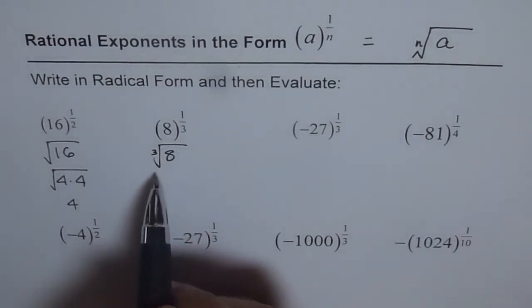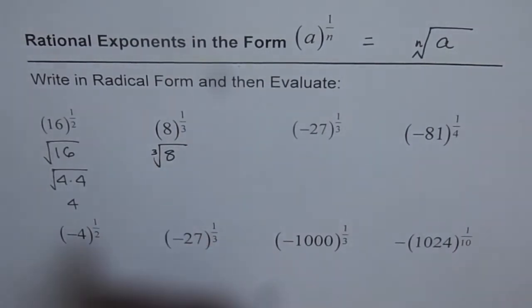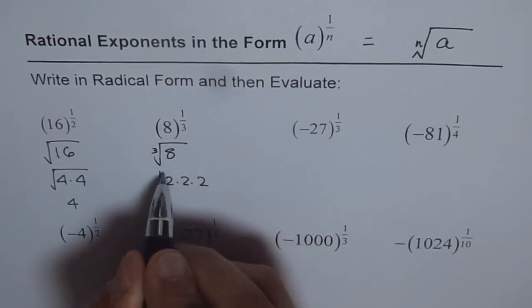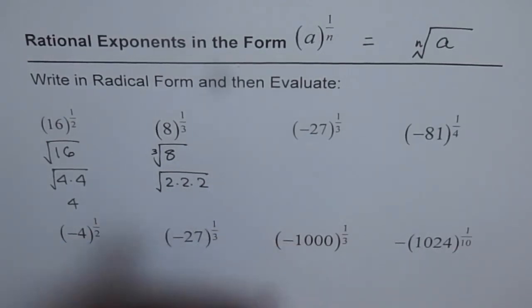Now, this is also called cube root. So, exponent 1 third or cube root of 8. What is cube root of 8? Cube root of 8 is 2. The reason is, when you multiply 2 times 2 times 2, that means 3 twos in a row, then you get 8.